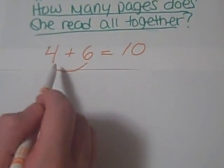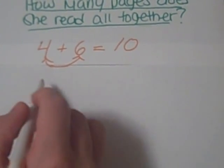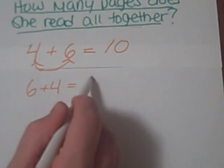We can also do the turnaround fact of that. By turning around the two parts, we can do 6 plus 4 equals 10.